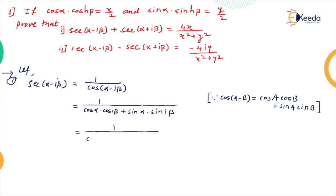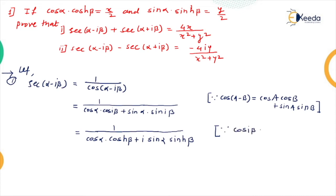Now applying the formulas: cos(iβ) = cosh β and sin(iβ) = i·sinh β. So cos(α − iβ) = cos α · cosh β + i·sin α · sinh β.